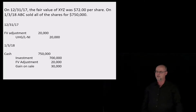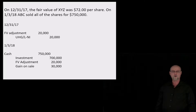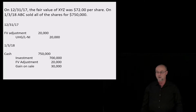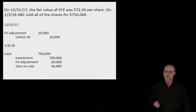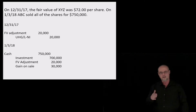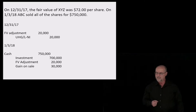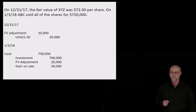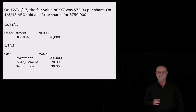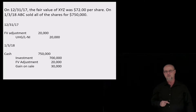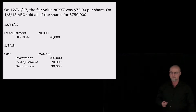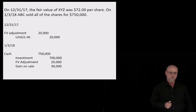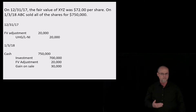On December 31st, year end, the fair value increased to $72 per share. The investment was originally recorded at $700,000; at the end of the year it's now worth $720,000 — 10,000 times $72 per share. We debit the fair value adjustment account $20,000 and credit the unrealized holding gain for net income for $20,000. That's going to hit the income statement, which means the unrealized holding gain will get closed out. The fair value adjustment account will sit on the balance sheet along with investments, showing that investments have increased in value since the initial investment.